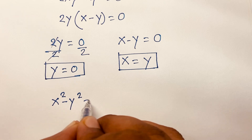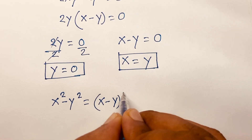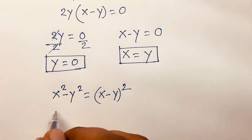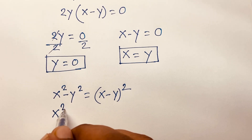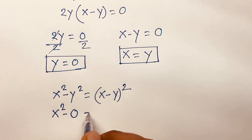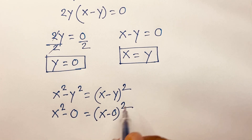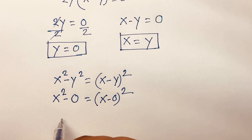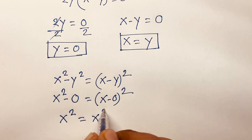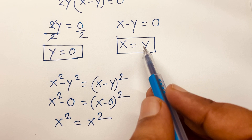For the first case, y equals 0: substituting gives x squared minus 0 squared equals (x minus 0) whole squared, which simplifies to x squared equals x squared. This is true, so y equals 0 is verified.